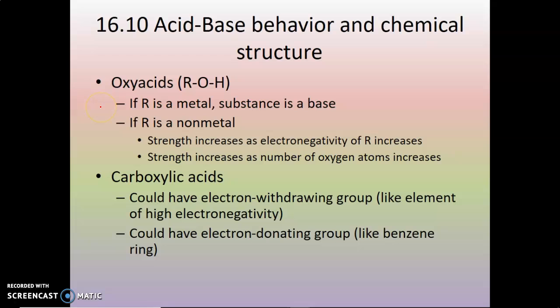Now, so there's oxyacids. You have some sort of R group, the rest of your molecule, and then you have O and then an H. Now, if the R is a metal, then this is going to be a base, because then this OH acts as a hydroxide group dissociating from your metal. However, if R is a nonmetal, then it becomes an acid.